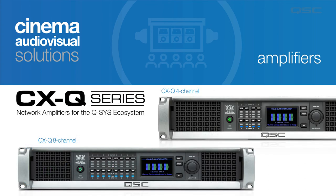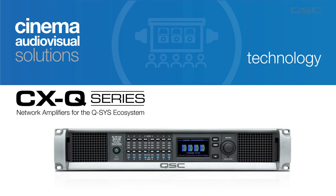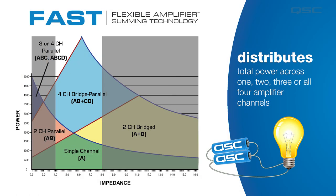The CX Q series are network amplifiers designed for the Q-SYS ecosystem. We have four and eight-channel models ranging to a total maximum power of up to 8,000 watts. FAST, or Flexible Amplifier Summing Technology, distributes the total amplifier power across either one, two, three, or all four channels, depending on how the amplifier is configured. This allows the amplifier to operate in both bridge and parallel modes and delivers the highest single channel power at 6 ohms — the sweet spot between standard 4 and 8 ohm loads.